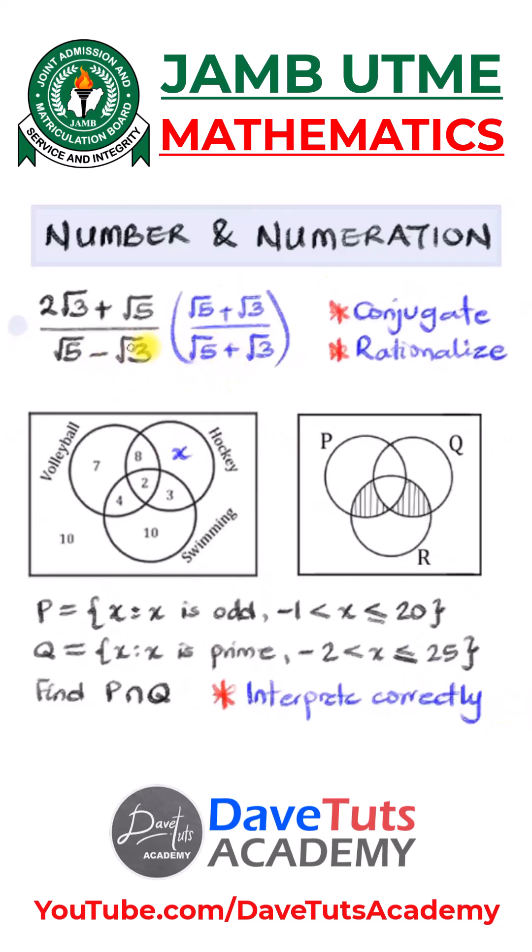Now, working with surds, you need to know how to rationalize surds, how to find the conjugate of a surd, which would be like in this case, the conjugate of root 5 minus root 3 is root 5 plus root 3. When you multiply these two together, eventually you are only going to have 5 minus 3 as the base, which is 2. So you need to know those tricks to actually express surds when you are working them.